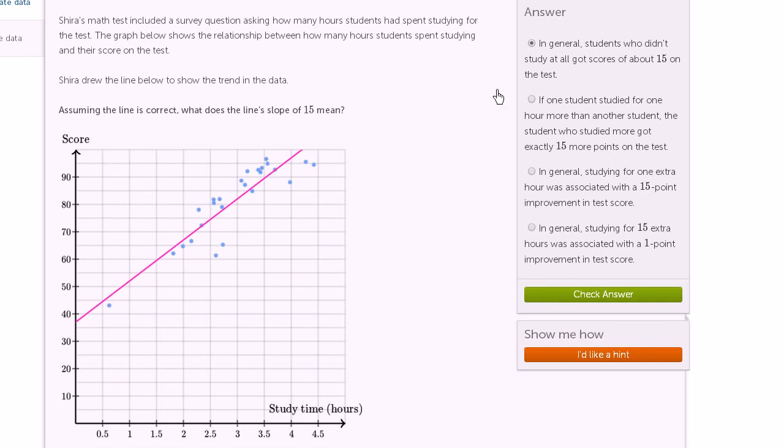Now let's see which of these are consistent. In general, students who didn't study at all got scores of about 15 on the test. Well, this is neither true. We don't see that these are the people who didn't study at all and they didn't get 15 on the test. And that's definitely not what this 15 implies. So this one is not true.